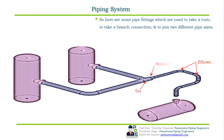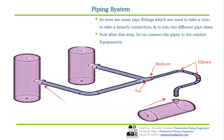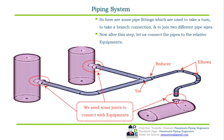Fittings used include elbows to take a turn, tees to take a branch, and reducers to join two different line sizes. So all the piping in our system is now connected, but they are not yet connected to the equipment. To connect them, we need some piping components, but the condition is it must not be a welded type of fitting.